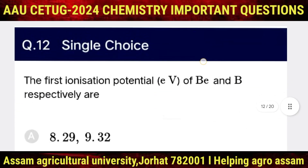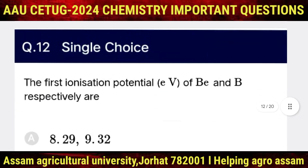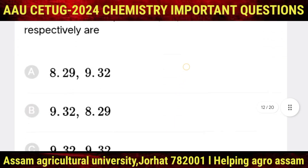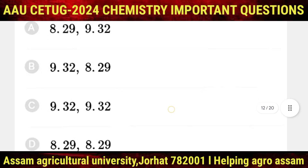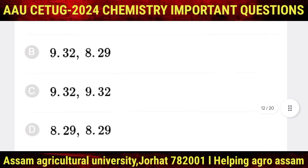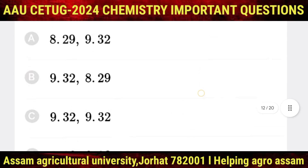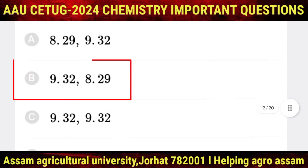Question number 12: the first ionization potentials of Be and B respectively are — the correct option is B: 9.32 and 8.29 electron volts.